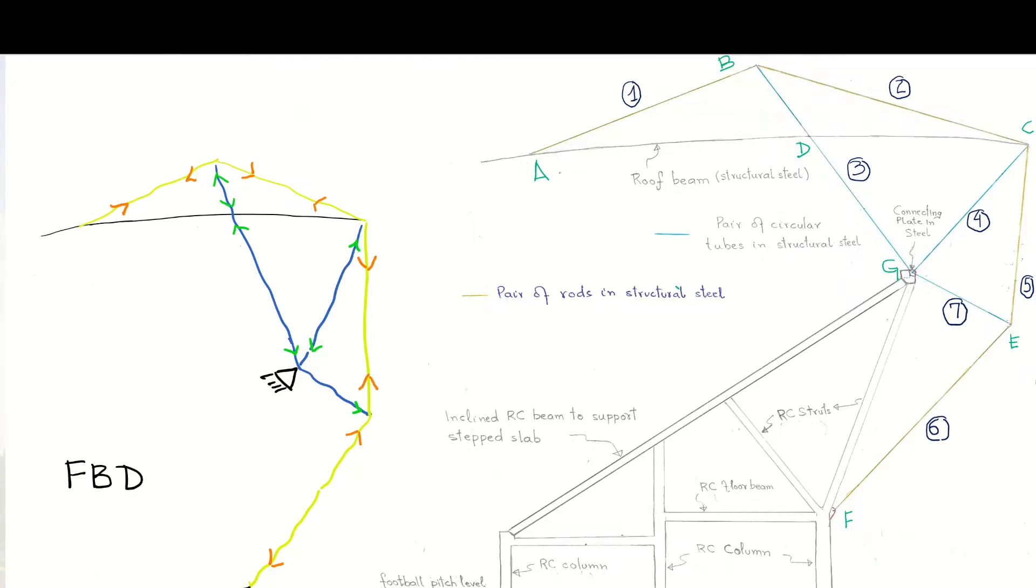The roof is supported with the help of a team effort of seven members. Four of them are in tension while the three of them are in compression. Members 1, 2, 5 and 6 are in tension while members 3, 4 and 7 are in compression.